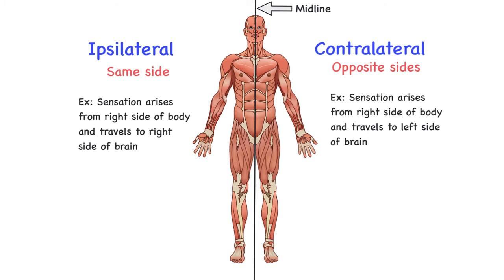We can also talk about these terms with muscle movements. If we're moving the muscles on one side of the body, that's an ipsilateral movement. If we're moving muscles on opposite sides of the body, that would be contralateral. There are many instances where the crossover is occurring from the brain to the body or from the body back to the brain. Sometimes it stays on one side of the midline and is ipsilateral, but if there is a crossing over to the other side of the midline, then it's contralateral.